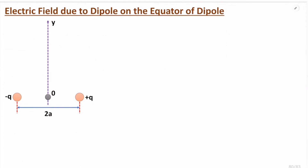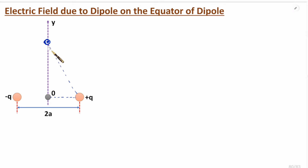Now I will derive electric field due to dipole on the equator of dipole. This is the dipole and this is the equator. Let us consider the Y axis, and on the Y axis, consider one observation point. Due to plus Q charge, the electric field will emerge from plus Q charge and go in that diagonal direction — that is E plus Q. Due to minus Q charge, the electric field is directed toward the negative charge, going in that direction — that is E minus Q.